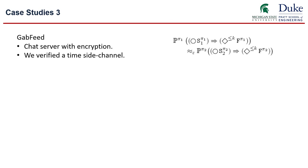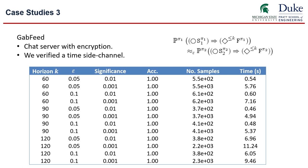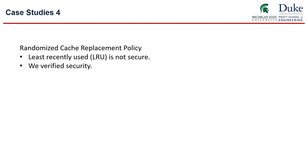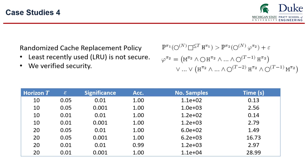Our third case study is on verifying whether there exists a time side channel of a chat server with encryption called GabFeed. Here, the existence of a time side channel can be expressed by hyper PCTL star like this. And for different time horizon t, we verify that this replacement policy is indeed immune to a time side channel attack.